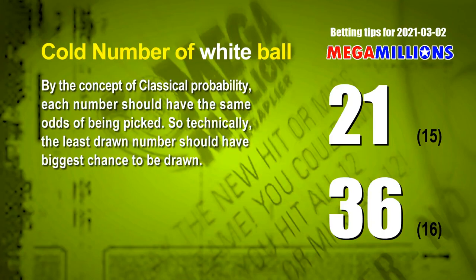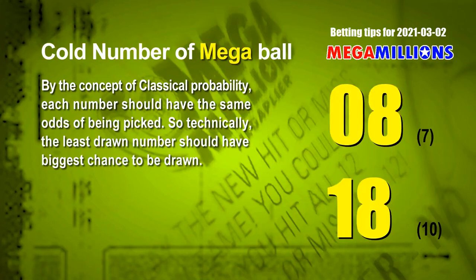At the end of this video, we have two more tips: cold numbers and overdue numbers. By the concept of classical probability, each number should have the same odds of being picked, so the least drawn number should have the biggest chance to be drawn. The two coldest white balls are 21 and 36 — white ball 21 has been drawn only 15 times and white ball 36 only 16 times in the last 348 draws. The two coldest Mega Balls are 08 and 18 — Mega Ball 08 drawn only 7 times and Mega Ball 18 only 10 times in the last 348 draws.